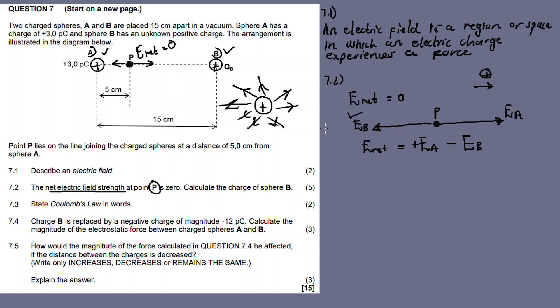Therefore, choosing to the right as positive, E_net equals E_A minus E_B, since E_B points to the left. E_net equals zero. E_A is K times Q_A divided by r_A squared, and E_B is K times Q_B divided by r_B squared. Setting these equal, we can solve for Q_B.